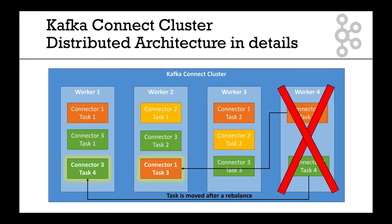When you have a distributed architecture and a worker dies, you just have a rebalance, and that rebalance allows your cluster to keep on doing what it's supposed to be doing. That means you can have a fault tolerant architecture — if you lose a rack of servers or a single server, your Kafka Connect cluster will just rebalance and everything will be fine. Running in distributed mode is so much better than standalone mode, because if it was standalone and you lose your server, it's gone. But using the Kafka Connect cluster, if you lose a server, the other ones will pick it up and your connector will still work.